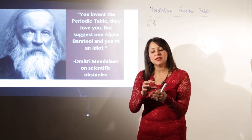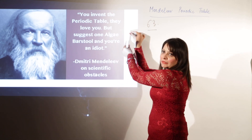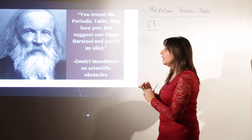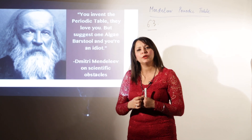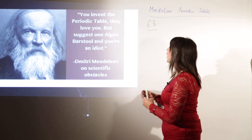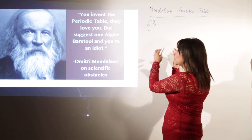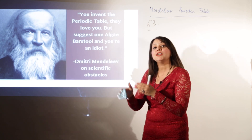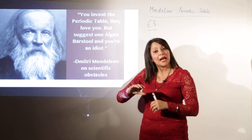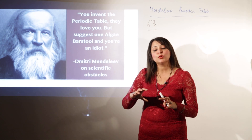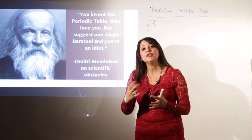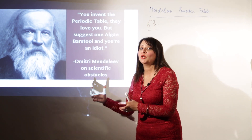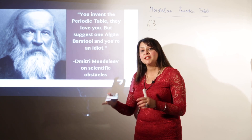He then pinned all 63 cards on the wall. He started sorting out the cards with similar properties — for example, grouping metals that were hard together. As he was doing this sorting, the elements accidentally got arranged in order of increasing atomic weights, and similarity in properties was also observed. This led to the formulation of his periodic table.